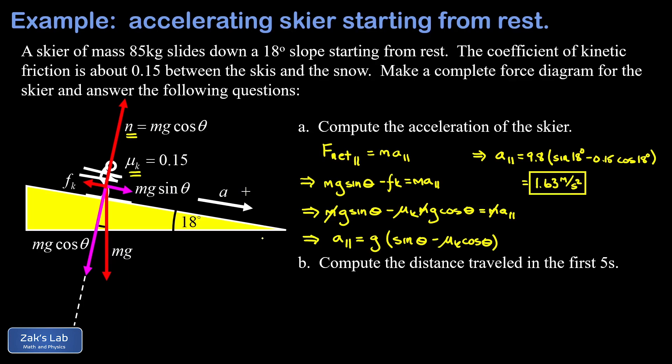Now we get to the follow-up question, and this is really just a one-dimensional kinematics problem. Now that we know the acceleration, and we know it's constant, we should be able to compute the distance traveled in the first five seconds. If I just list my kinematic variables: my initial position I'm going to call zero, my initial velocity is also zero because we were told the skier started from rest, my acceleration just turned out to be 1.63 meters per second squared, and the time for the process is five seconds.